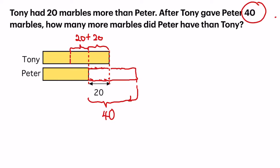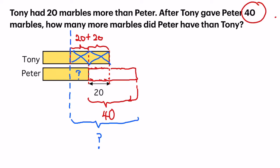Now we are ready to compare how many more marbles Peter had than Tony. I'm going to draw a line to indicate that this is no longer existing. To compare the difference, I will draw a line down here. The question is asking about this portion — what is the amount? Comparing to the top, it should be 20, and comparing to the top again, it is another 20 here.